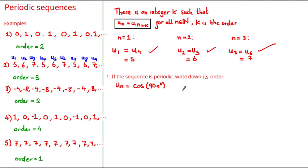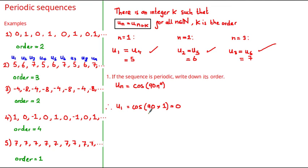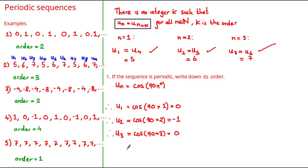Now let's have a look at some questions. A typical question is one where you'll either be given a recurrence relationship formula or the formula for the nth term of the sequence, and you'll be asked to determine whether it's periodic or not and, if it is periodic, write down its order. Here we have the nth term u sub n is equal to cosine of 90 times n degrees, and we need to find out whether it's periodic. Let's start writing out terms. Substituting 1 into this formula, u sub 1 is equal to cosine of 90 times 1, which is equal to 0. The next term, u sub 2, is equal to cosine of 90 times 2, which is equal to negative 1. The next term, u sub 3, is equal to 0. The next term, u sub 4, is equal to 1.